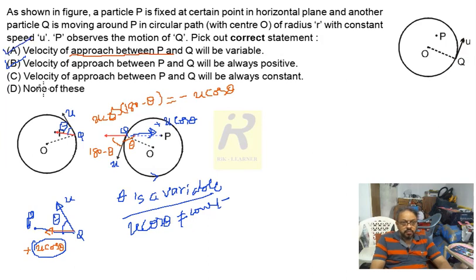And thinking over option C, velocity of approach between P and Q will always constant. This is always constant. This is wrong. So it becomes contradiction with option A. And I have given you the reason. And since I have already chosen option A and B right, so D is also wrong. So from this analysis, you can simply confirm option A and B are exactly correct.